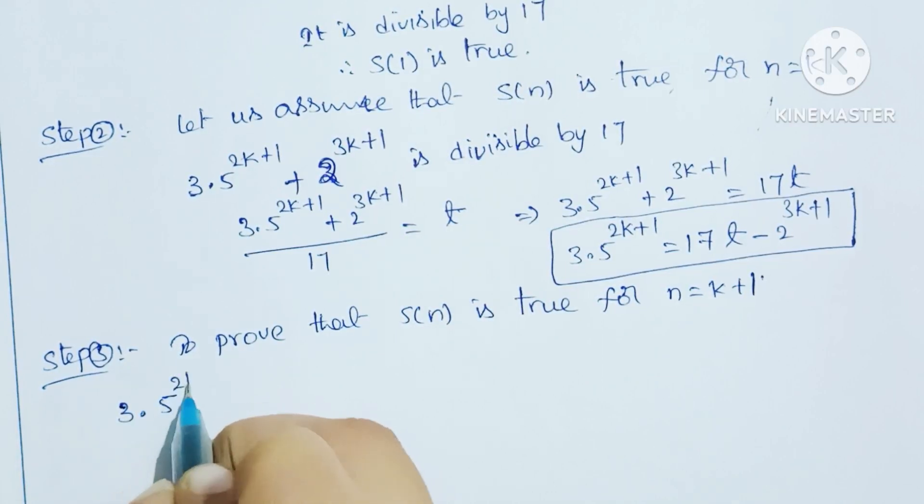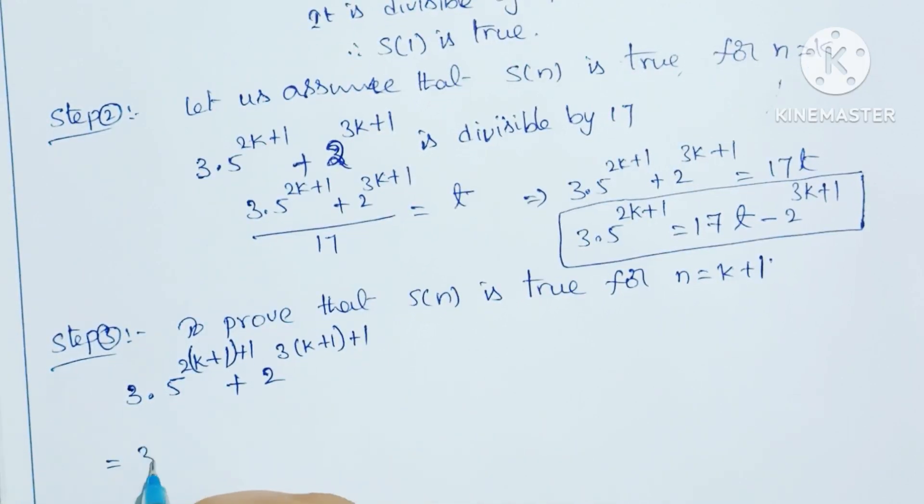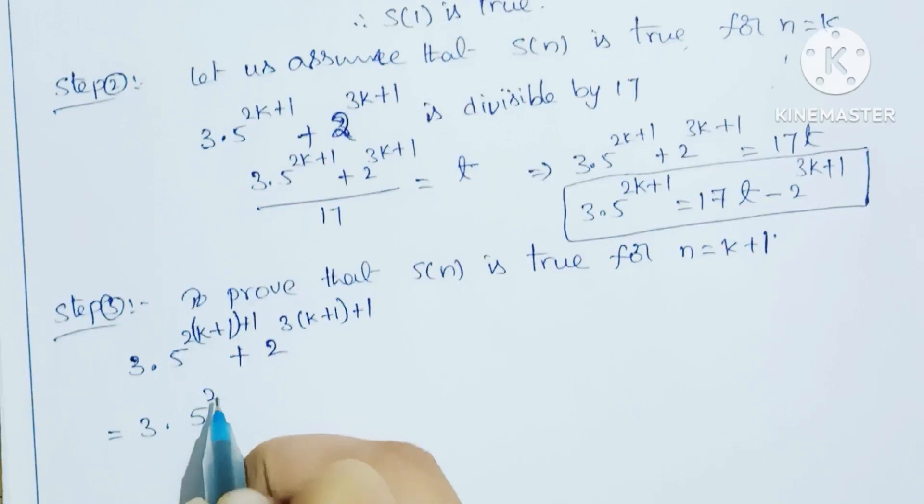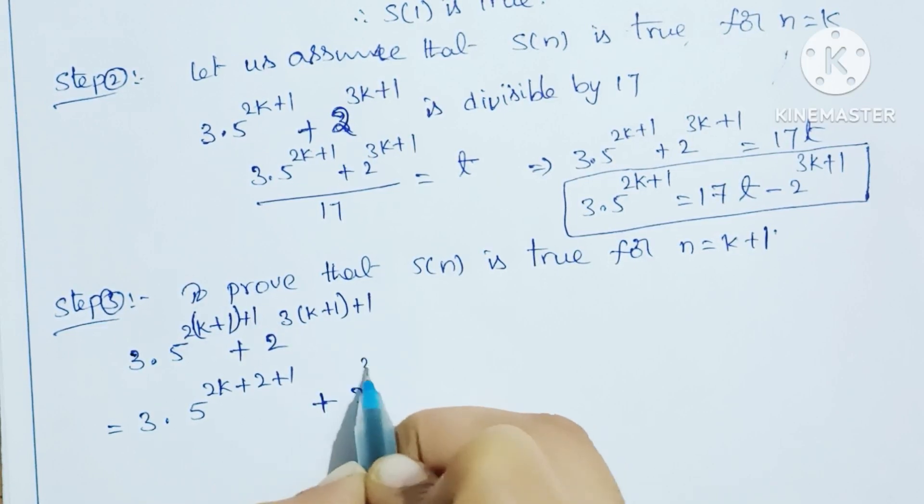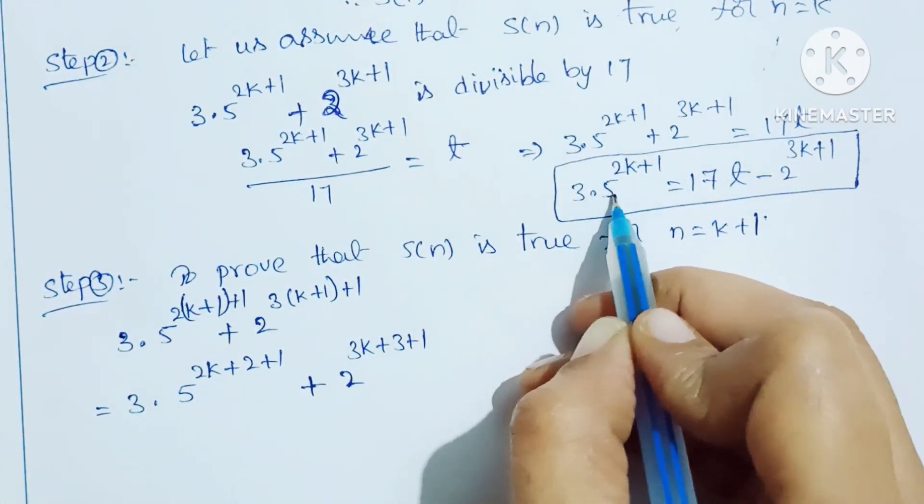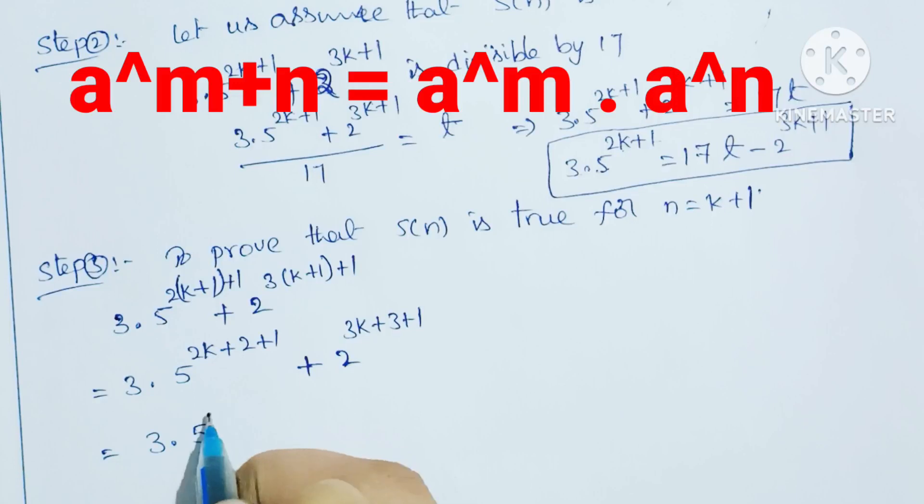Step 3: Prove S(k+1). We need to prove that S(k+1) is true. 3 into 5 power 2(k+1) plus 1 plus 2 power 3(k+1) plus 1. That equals 3 into 5 power 2k plus 2 plus 1, plus 2 power 3k plus 3 plus 1.